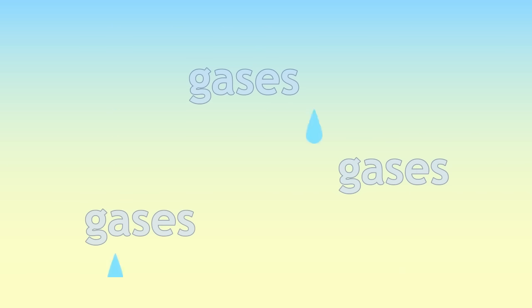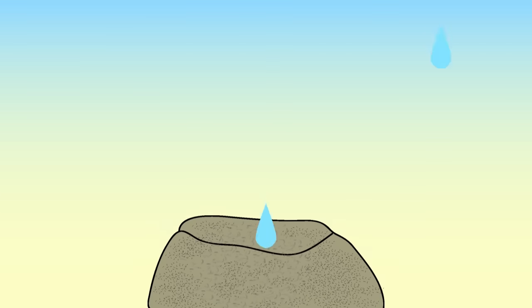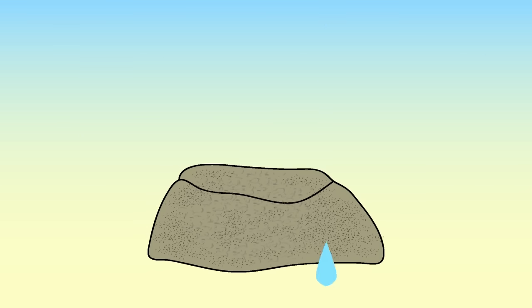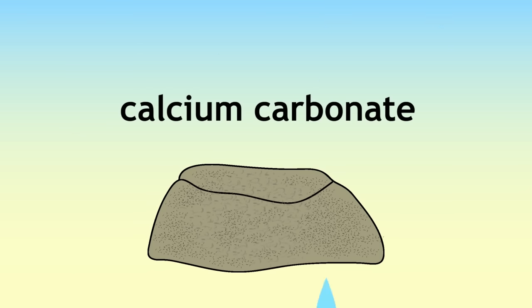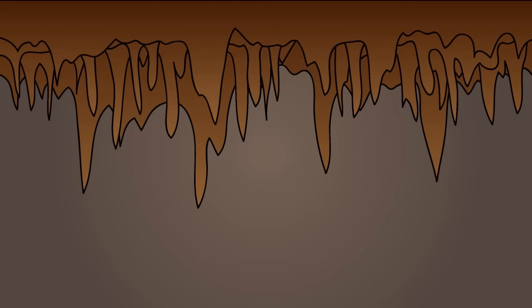However, gases from the air can dissolve in rainwater, and one of these is dissolved carbon dioxide. When rainwater falls on limestone — that's calcium carbonate — the limestone dissolves slowly, which is how the great caves full of stalactites are formed.